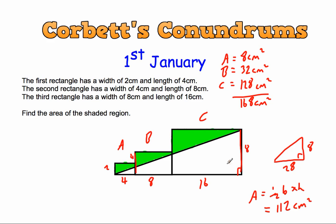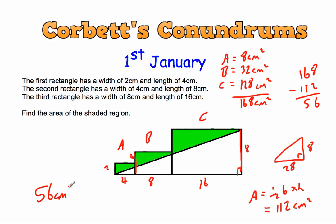If we take the white triangle area away from the whole thing, we'll be left with the shaded green region. So 168 minus 112 gives us an area of 56cm squared. And that's the answer: 56cm squared.